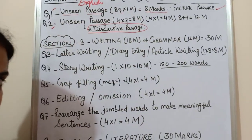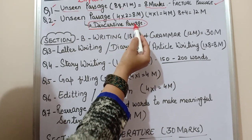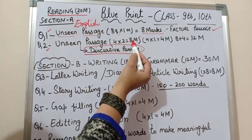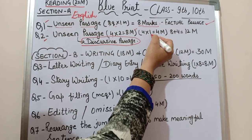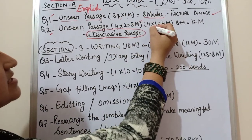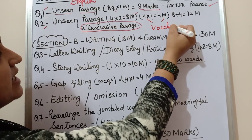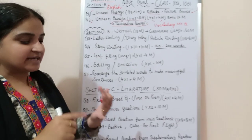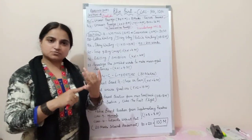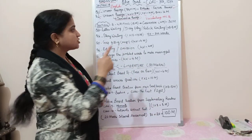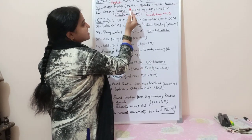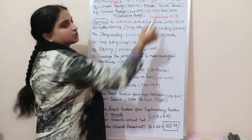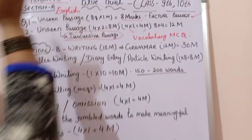That makes eight marks for the discursive answers, and the word limit for answering these questions is 20 to 30 words. Additionally, there are four questions of one mark each, which are vocabulary-based MCQs — antonyms, synonyms, or nouns — anything could be asked from the passage. So four marks for vocabulary MCQs plus eight marks for discursive answers gives twelve marks. Twelve plus eight equals twenty marks, completing Section A.